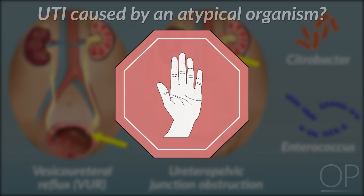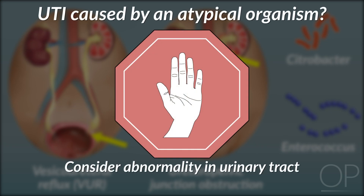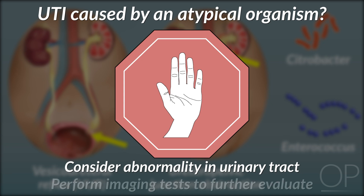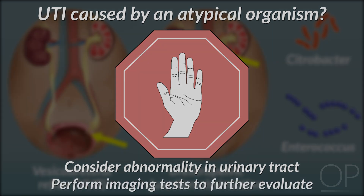If a patient has a UTI caused by an atypical organism, one must consider whether there is an abnormality in the patient's urinary tract and perform imaging tests to further evaluate.